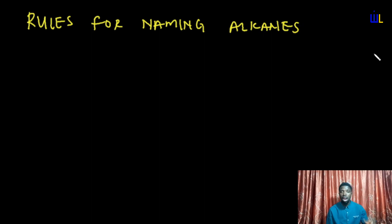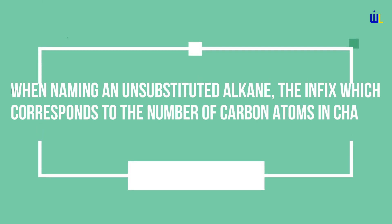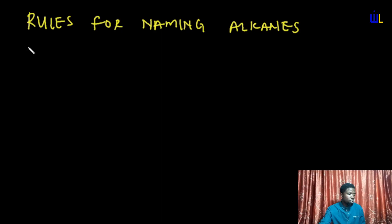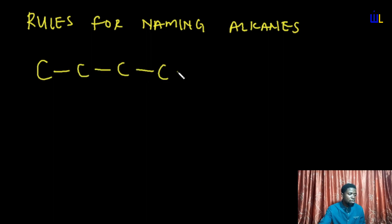Specifically, what we're going to be concentrating on are the rules to name alkanes. The first rule in naming an alkane is that for an unsubstituted or unbranched alkane, the infix — which corresponds to the number of carbon atoms in the chain — is attached to the suffix '-ane.' Let's look at the screen.